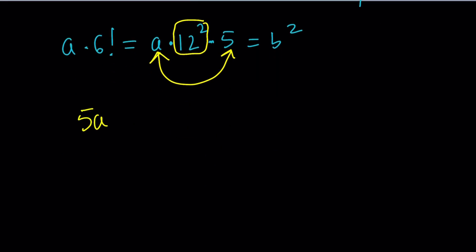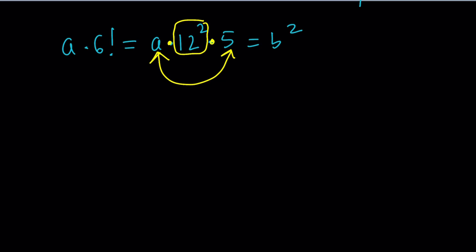This problem reduces to finding something like this. The reason I pick a different variable is because 5 times a is not b squared — it is another perfect square. So in this case, we're going to look for something that will multiply by 5 to make a perfect square. Obviously 5 is the smallest value, but if I multiply 5 by any perfect square, then this product will also be a perfect square because it'll be 5 squared times d squared. In other words, a needs to be 5 times a perfect square. That way, when you multiply by 5, it'll be a perfect square. So 5 times a needs to be a perfect square, which is like c squared. Therefore, a needs to be 5 times d squared.